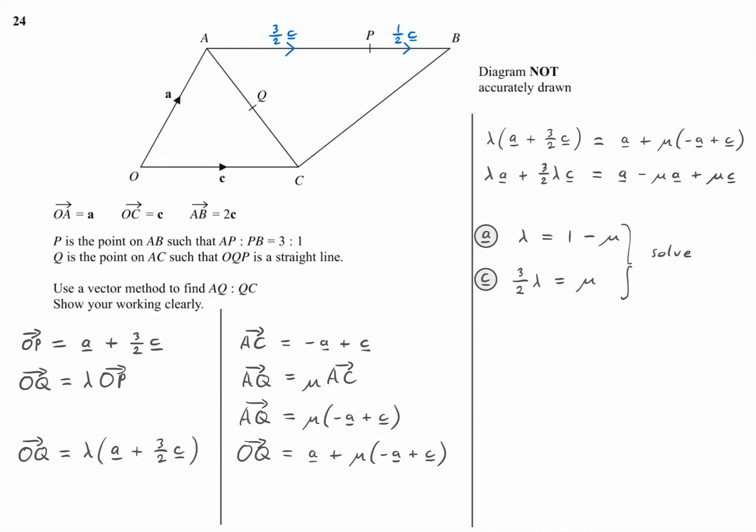And that's a pair of simultaneous equations which we can now solve easily. In this case you can just add the two equations together because we've got negative mu and positive mu and they'll cancel each other out. When you do that, that just gives us lambda is 2 fifths and mu is 3 fifths. So we've finally solved to find the values of mu and lambda.